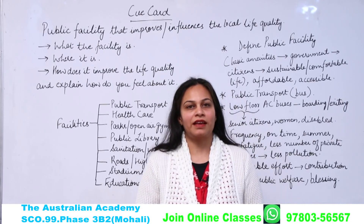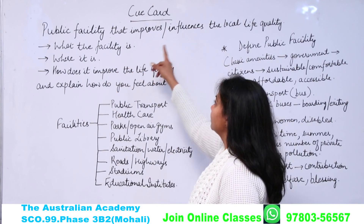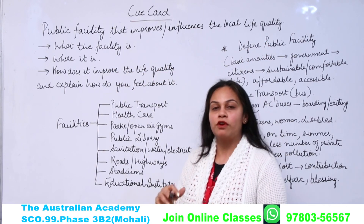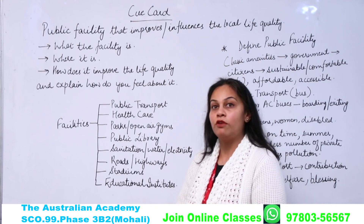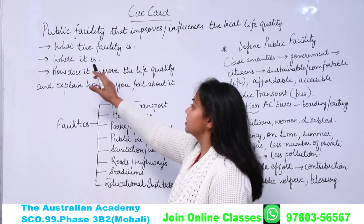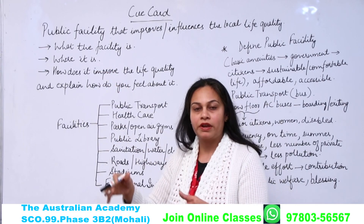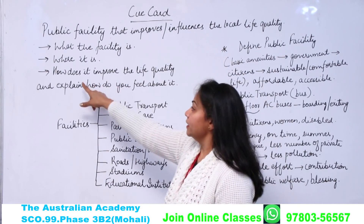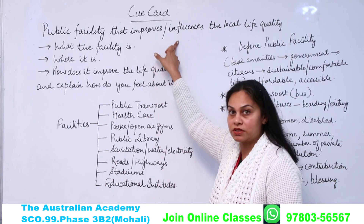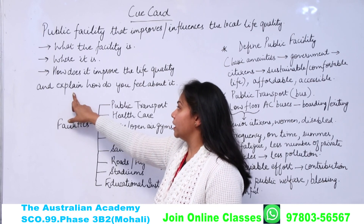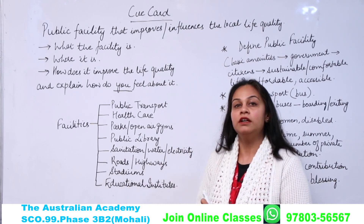Hello everyone, this is Anu from the Australian Academy. The cue card I'm going to discuss with you today is: a public facility that improves or influences the local life quality. You have to talk about a basic amenity provided by the government which has improved the quality of life of residents, covering what the facility is, where it is, how it improves life, and how you feel about it.